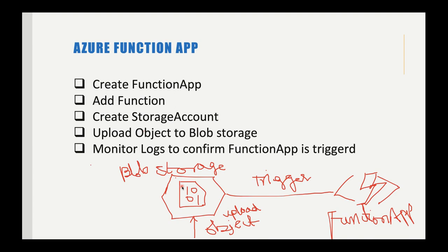In today's data pipelines we need to automate a few things. Whenever we receive any new events we need to react to them. To automate that, we need the Function App. Function App is basically serverless code — we write a small piece of code and we don't need to focus on any servers or infrastructure deployment.